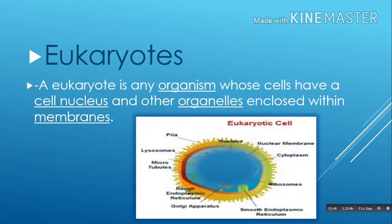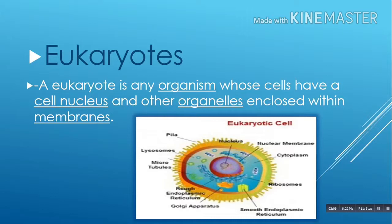Eukaryotic cells are a definite step upward in complexity. Just as a large family home is split into many rooms with different purposes, so eukaryotic cells contain a variety of different compartments with specialized functions, neatly separated from one another by layers of membrane. This organization lets each compartment maintain its own conditions — the ones it needs to carry out its job.